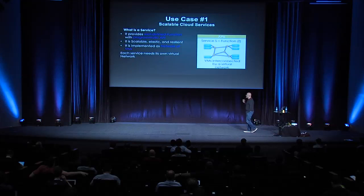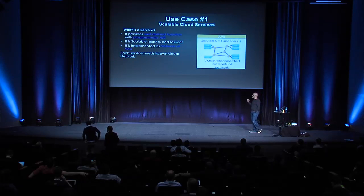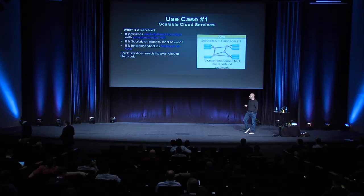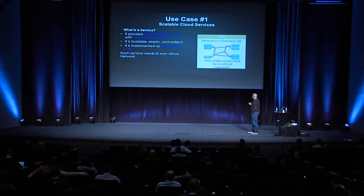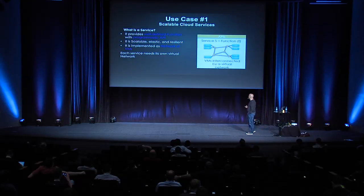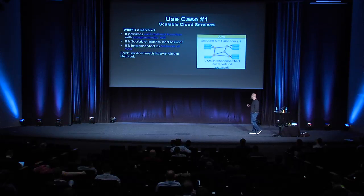Let me go through some use cases to motivate what OVX can do. First, imagine a scalable cloud service, where a service is something with a well-defined programmatic API, is scalable, and is implemented as a network of VMs. If you want to scale the service, it's not sufficient to just scale your number of VMs, because the more VMs you have, the more traffic you attract and you'll congest your network. So you need to scale the compute and networking simultaneously — and that's exactly what OVX does.